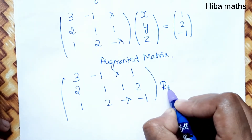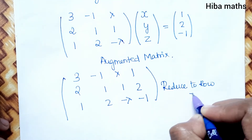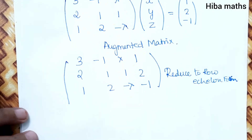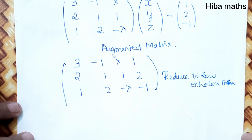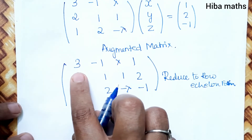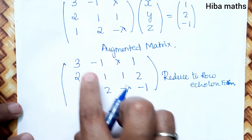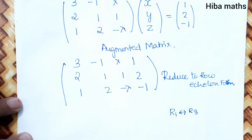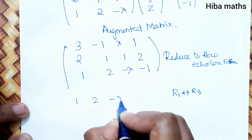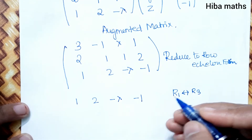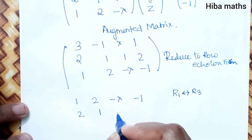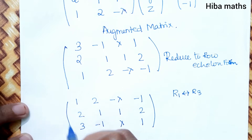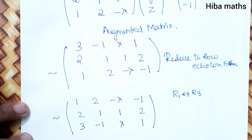We reduce to row echelon form. To get a leading 1 in the first row first column, we interchange R1 and R3. After R1 ↔ R3, the matrix becomes: R1 = [1, 2, -lambda, -1], R2 = [2, 1, 1, 2], R3 = [3, -1, lambda, 1].